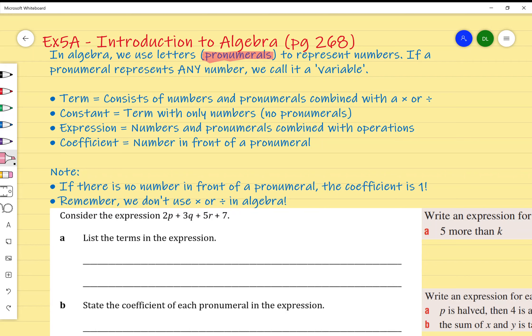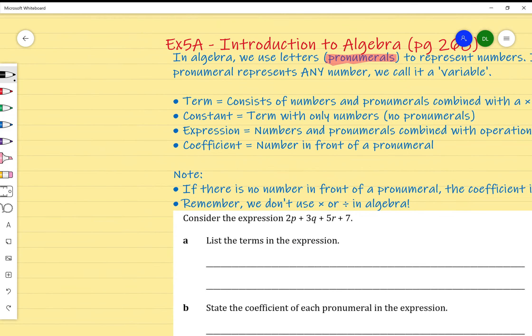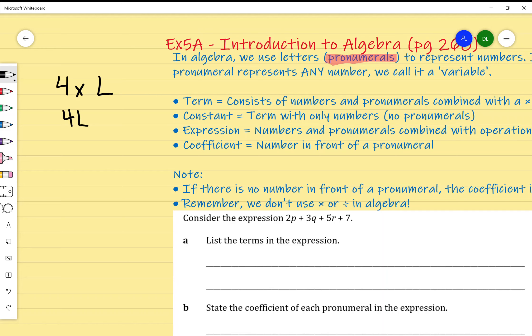We've briefly mentioned that in algebra we don't use a multiply or divide symbol. Instead of writing 4 times L, we write 4L. Instead of writing 3 divided by B, we write it as a fraction where 3 is over B, or 3 divided by B. So keep that in mind as we move on.